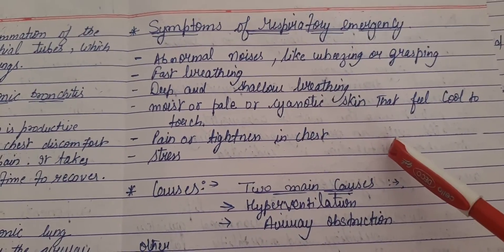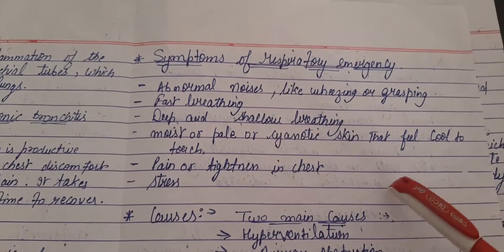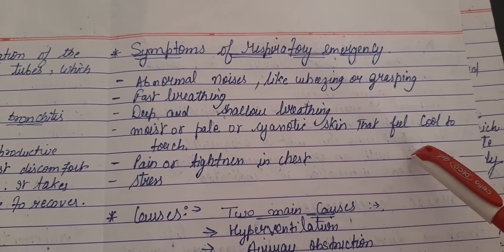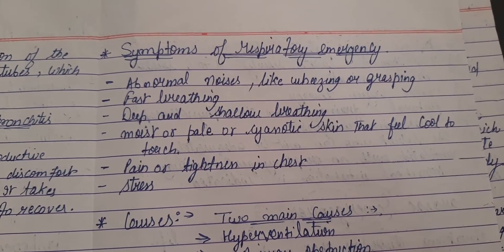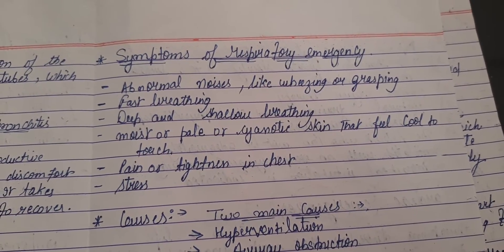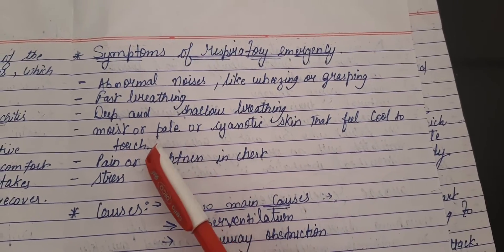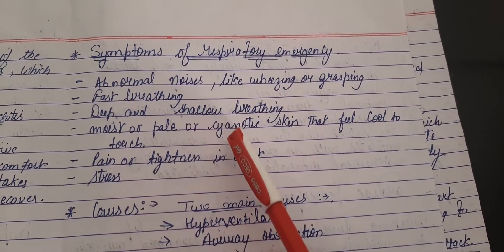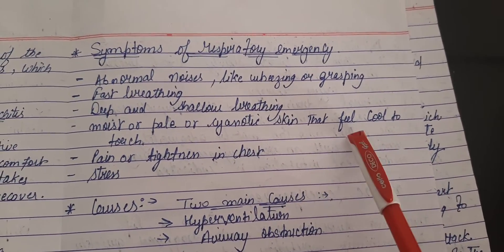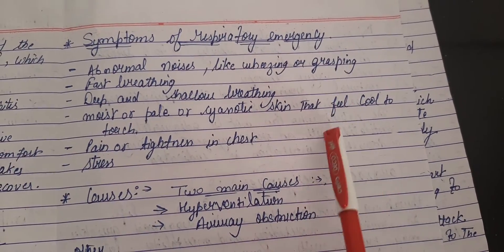To know that a patient is suffering from a respiratory emergency, you must know the signs and symptoms. The common signs and symptoms are: abnormal noises and wheezing sounds, fast breathing, deep and shallow breathing, pale and cyanotic skin — you can feel the cool, clammy skin of the patient by touching — and pain, tightness, and chest stress.